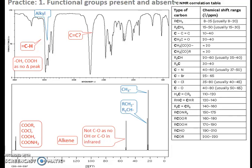There's also nothing in that 170 to 200 ppm range in the NMR spectrum. So we know it's not an ester, an acyl chloride, an amide. It's none of those things. So figuring out what is absent is just as important as figuring out what is present.